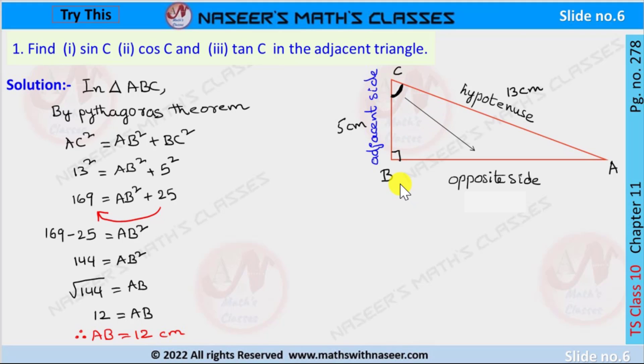Angle B is 90 degrees, so its opposite side AC is the longest side, that is the hypotenuse. Its value is 13 cm. With respect to angle C, AB is the opposite side and BC is the adjacent side.